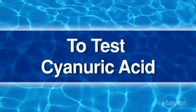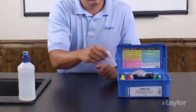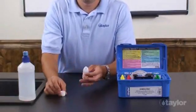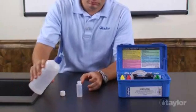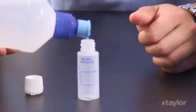To test cyanuric acid, rinse and fill the CYA dispensing bottle, number 9191, to the 7ml mark with the water to be tested.